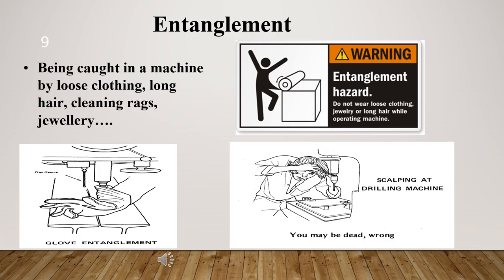In this part, we will learn about entanglement hazard. Entanglement and entrapment hazards are classified as caught-in or caught-between by OSHA. Exposures to this hazard occur when clothing, hair, jewelry, or body parts become caught within machinery and equipment that have unguarded moving parts or that are not de-energized or locked out during maintenance. Entanglement can result in serious injury or death, including scalping, amputation, and degloving.